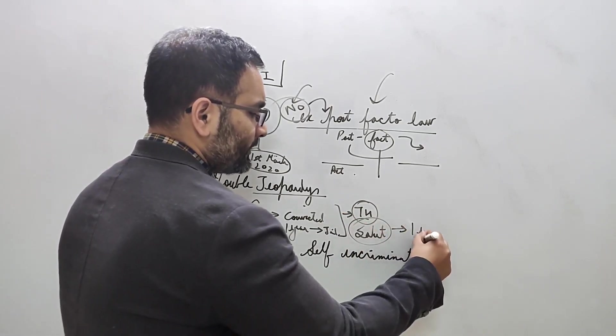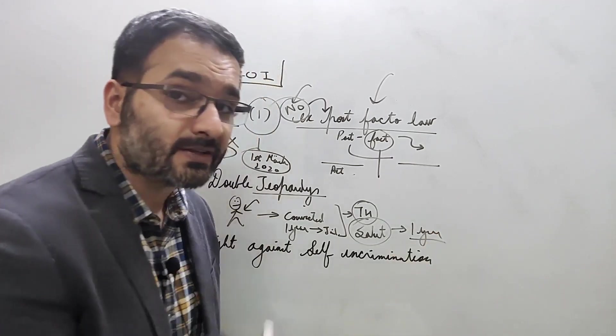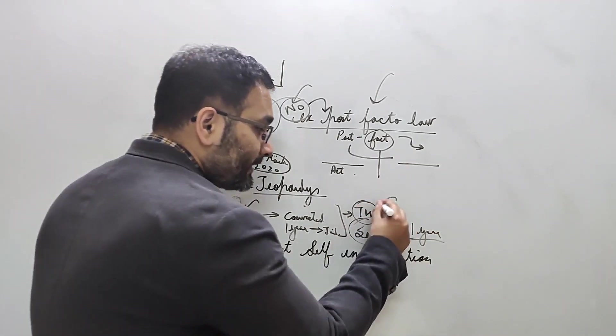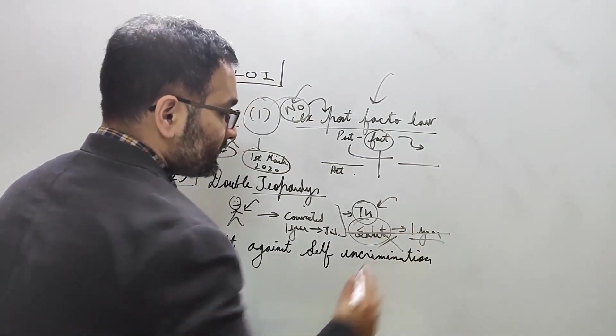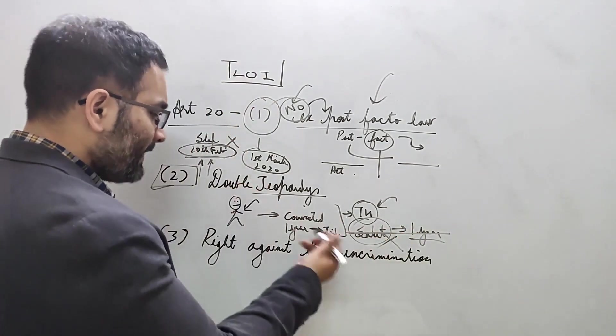And then punishes him for one more year for the same offense. He's been convicted and punished already, right? He cannot - this cannot happen. This is what it says.